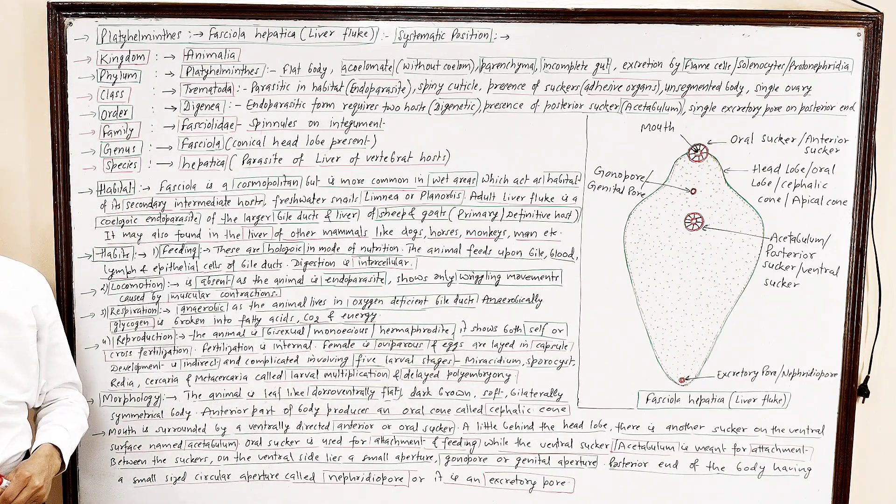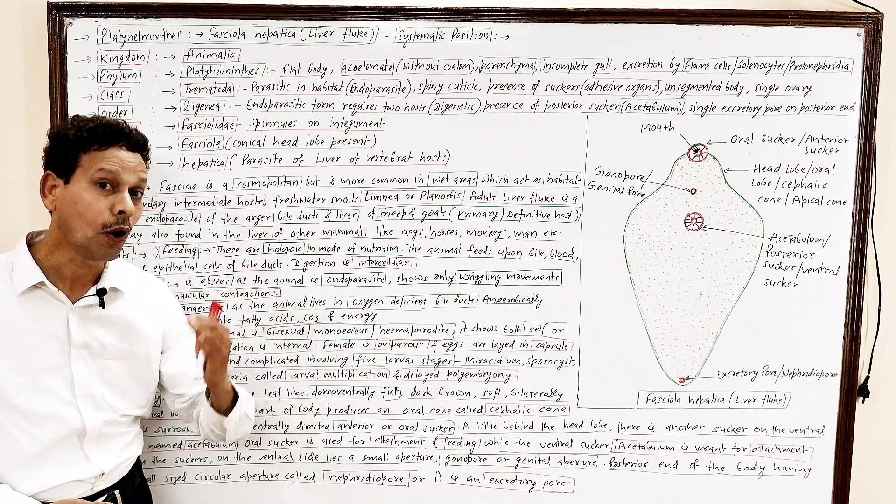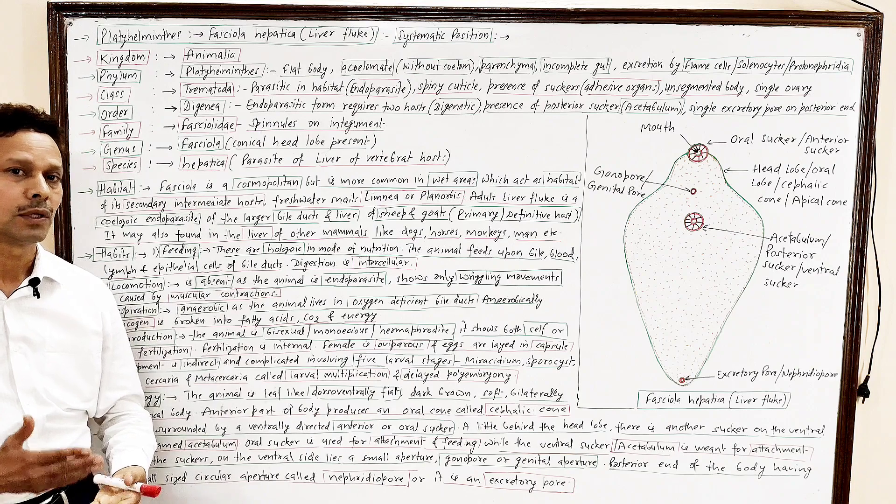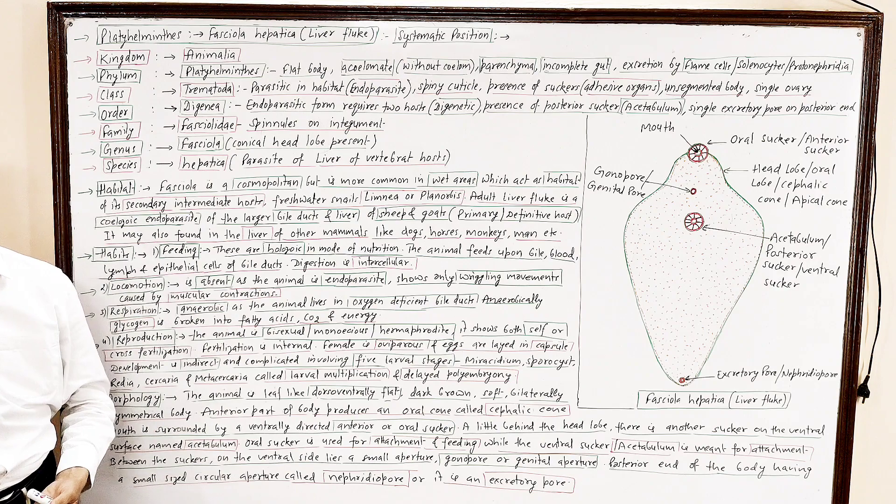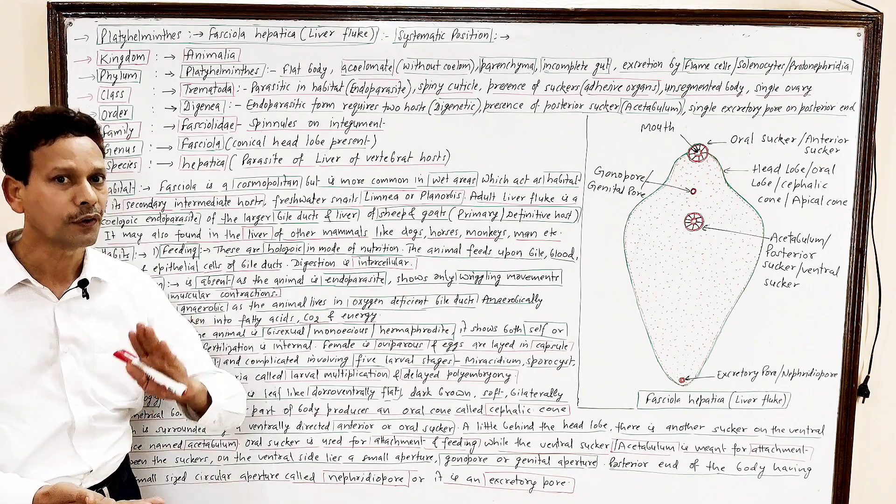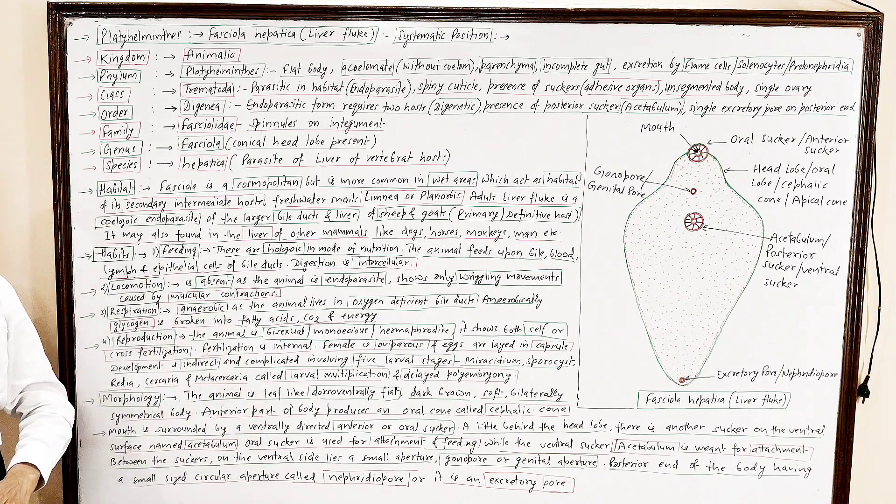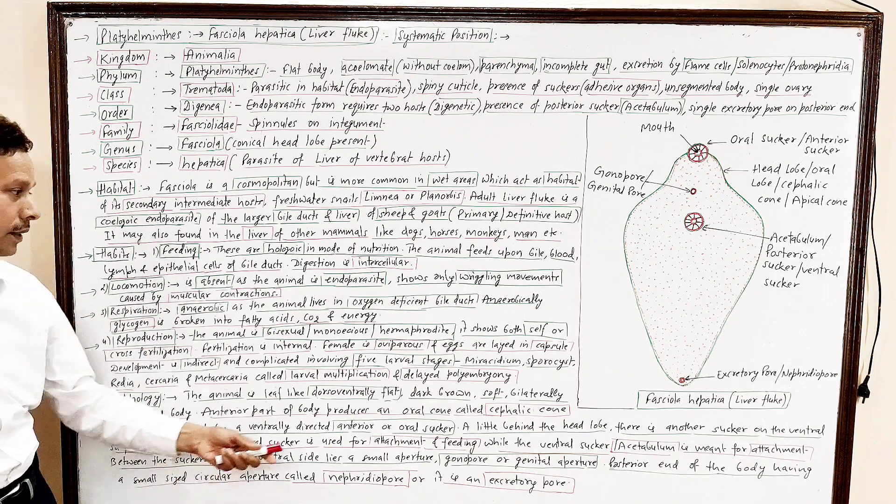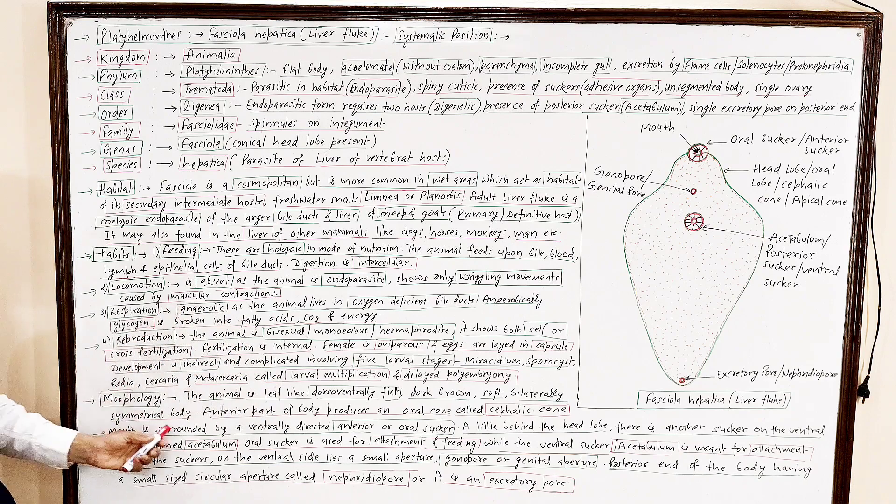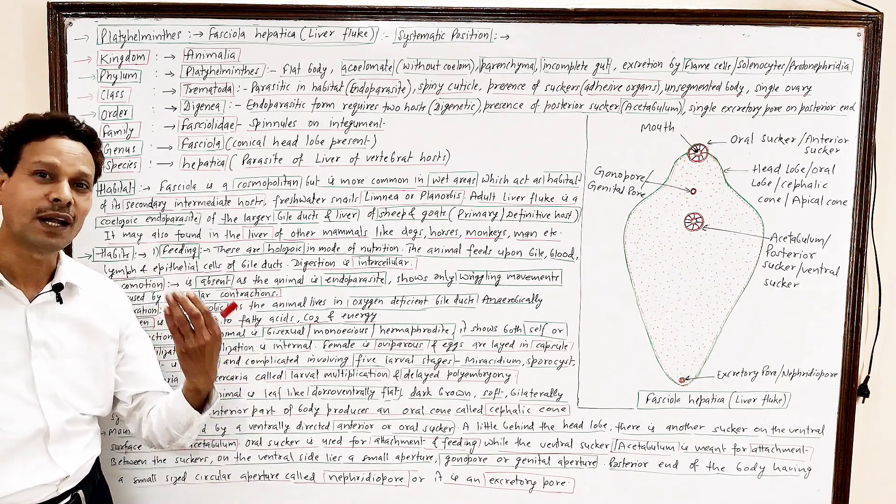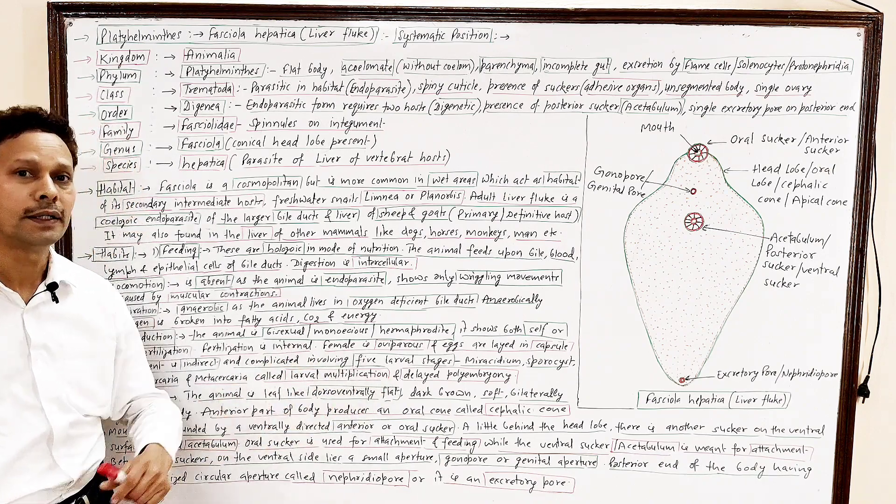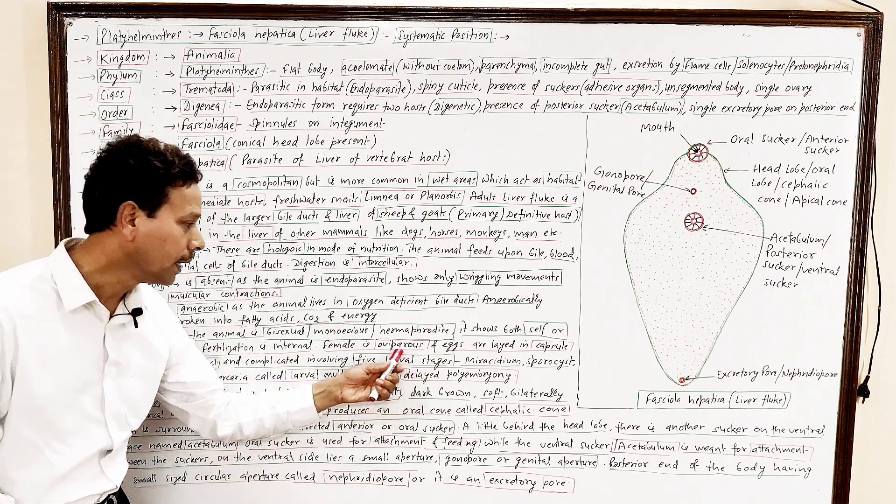And in their life cycle, which is complicated, that life cycle involves several larval forms. These are Miracidium larva, Sporocyst larva, Redia, Cercaria, Metacercaria. In its life history, five larval stages: Miracidium, Sporocyst, Redia, Cercaria, Metacercaria. Complicated larval stages are present. This type of, this type of development, it is polyembryony, it is delayed polyembryony. Dear students, presence of several larval forms, it means the development is indirect that involves several larval stages. It is called larval multiplication and delayed polyembryony.